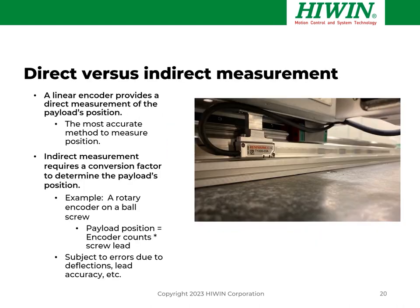Another important concept is how we make our measurement — direct or indirect. A linear encoder is a device that provides direct measurement of the payload's position and is the most accurate method. It measures directly without any intervening elements introducing errors. An indirect measurement requires a conversion factor and involves intervening elements to determine payload position. For example, in a ball screw system with a rotary encoder, payload position is a function of encoder counts and the lead of the screw — subject to errors from deflections, inaccuracy in the screw lead, manufacturing tolerances, and wind-up.